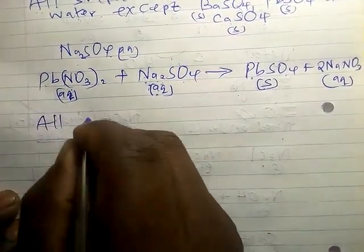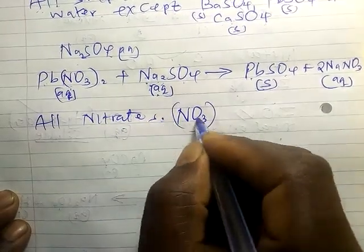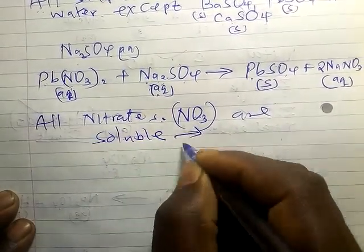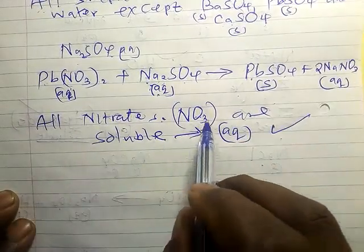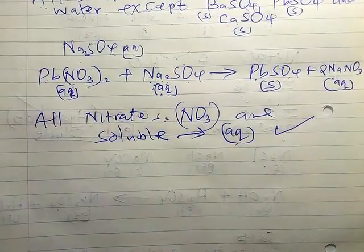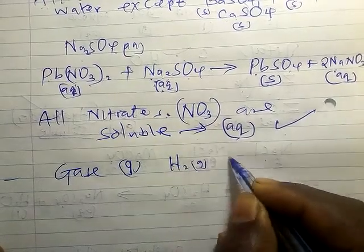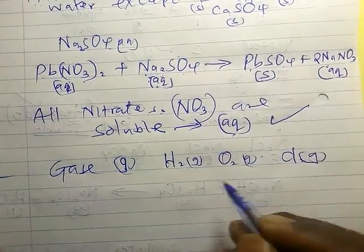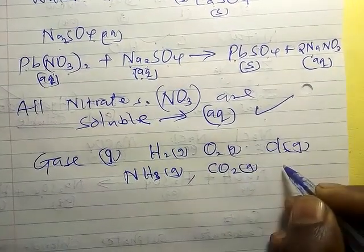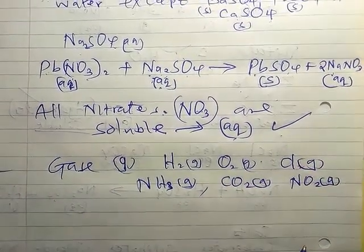Lastly, all nitrates — sodium nitrate, magnesium nitrate, aluminium nitrate — all of them are soluble. In other words, all of them are aqueous. Anytime you see a nitrate, just write AQ as the state symbol. For gases: hydrogen (G), oxygen (G), chlorine (G), ammonia (G), CO₂ (G), NO₂ (G). Gases we just write G because we know they are gases.